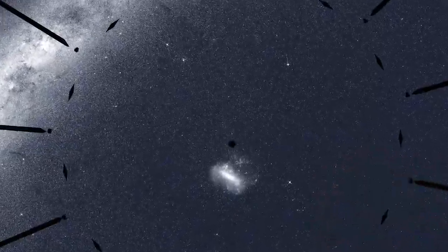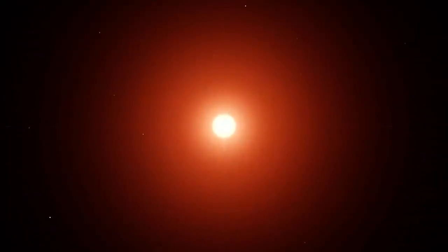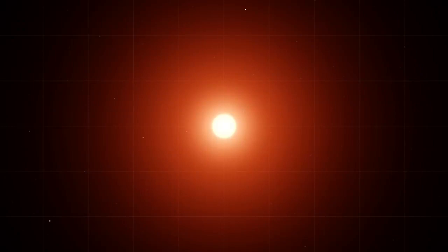One star where TESS saw transits is TOI-700. It's a red dwarf about 40% the mass and size of our Sun, and roughly half its temperature.